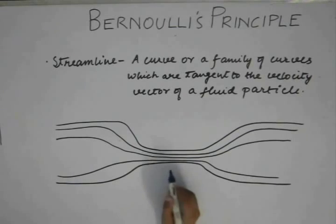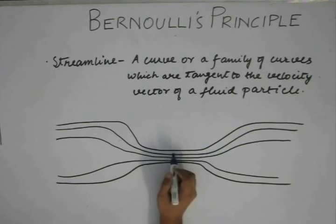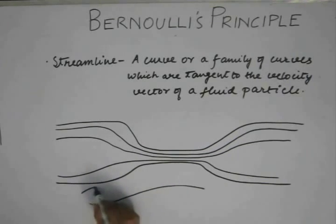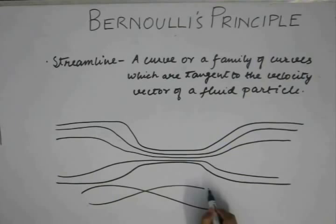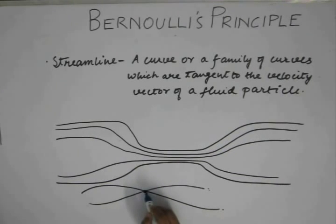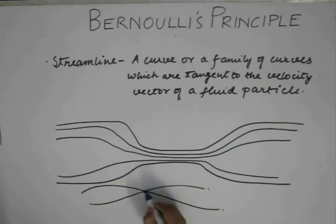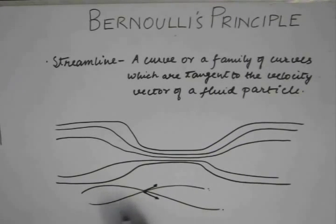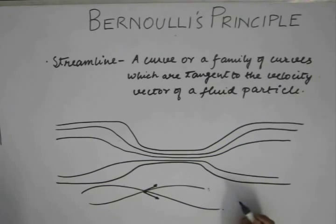Another important property of streamlines is that two streamlines can never intersect each other. If we consider a hypothetical point of intersection, the fluid velocity there would have to be unique — a fluid particle cannot simultaneously have velocity in two different directions. This contradiction means streamlines cannot intersect.